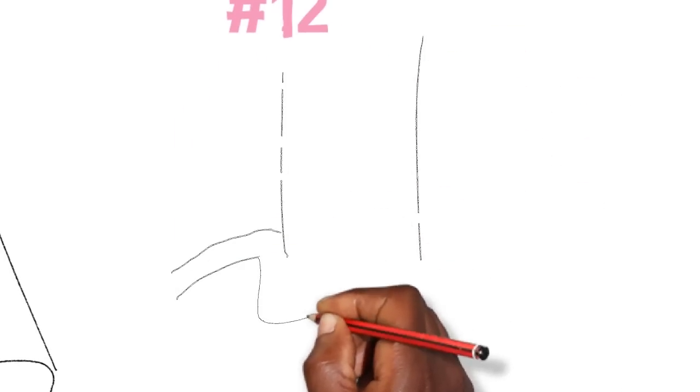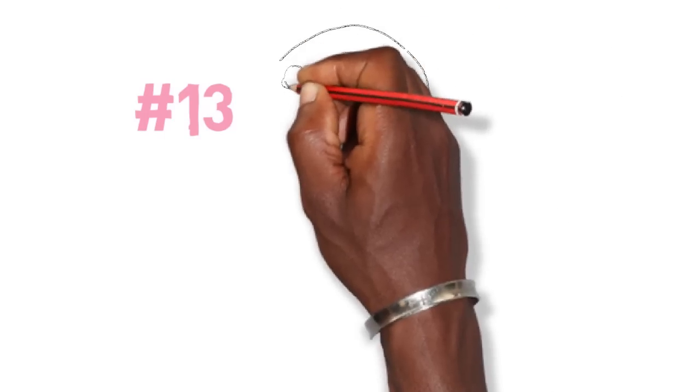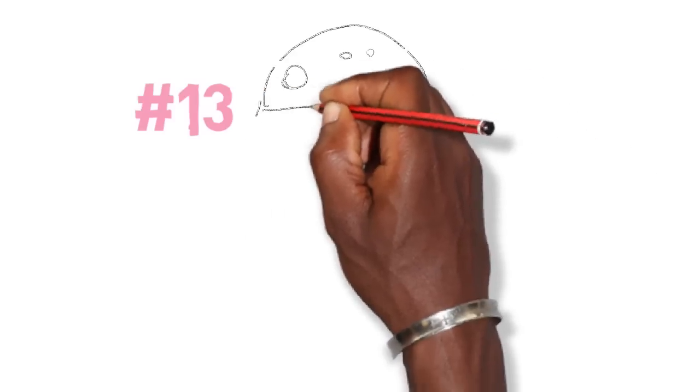Number 12, use a roll hem. If possible please use a small rolled hem. And then number 13, wash out stabilizers. Just carefully wash out any starches or stabilizers that you might have used.